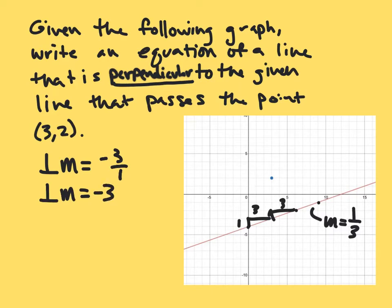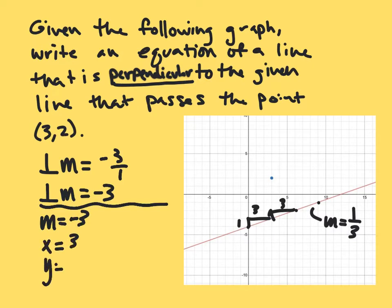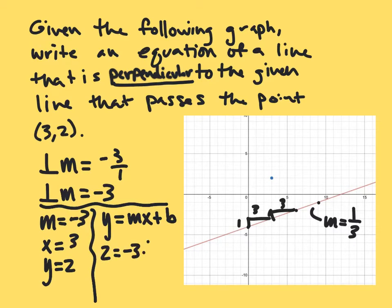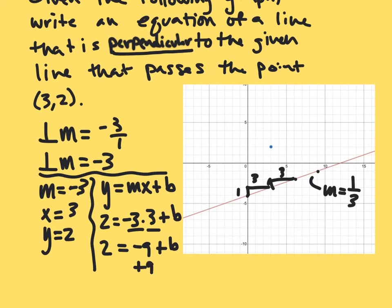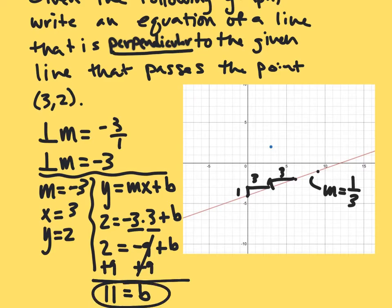So our perpendicular slope is negative three. We have our point with x equal to three and y equal to two. Using y equals mx plus b, we plug in two for y, negative three for m, and three for x plus b. Negative three times three gives us negative nine plus b, equal to two. Adding nine to both sides gives b equals eleven. So the equation is y equals negative three x plus eleven.